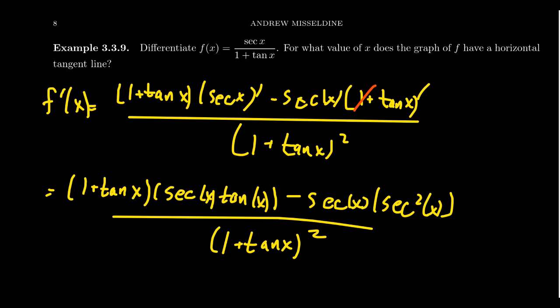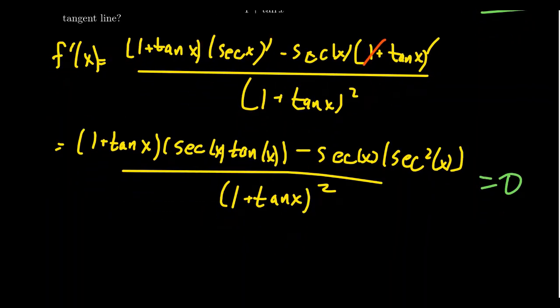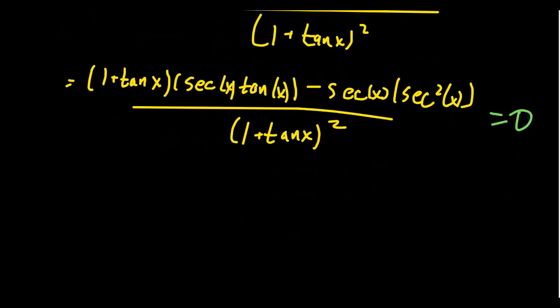We need to figure out where the horizontal tangent lines are. A horizontal tangent line has slope equal to zero, and since the slope is the derivative, we need to find where the derivative equals zero. Whenever a fraction equals zero, that only happens if the numerator equals zero — you can't make something equal zero by setting the denominator to zero. So we multiply both sides by (1 + tangent squared) and work with the numerator.